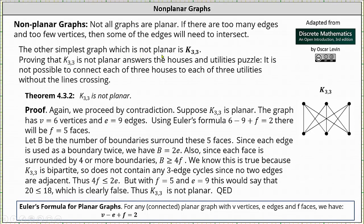The other simplest graph that is not planar is the bipartite graph K3,3. Proving that K3,3 is not planar answers the house and utilities problem from earlier in the chapter. It is not possible to connect each of the three houses to each of the three utilities without the lines crossing. And now let's prove K3,3 is not planar.